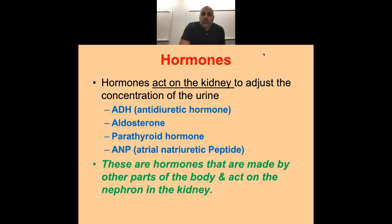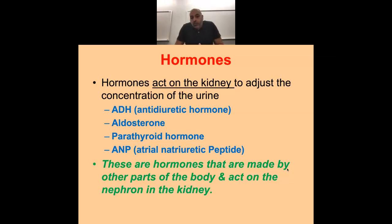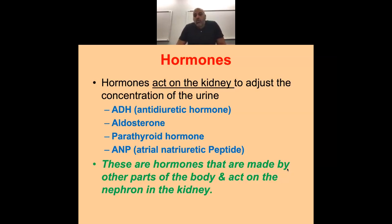Continuing on with hormones. When we talk about the kidney with each of these hormones, there must be a receptor for the hormone and we must produce the hormone. If we overproduce the hormone, we're going to overstimulate whatever the hormone stimulates. So with controlling pressure in the body — controlling blood pressure — all of these, minus parathyroid, are working on that.